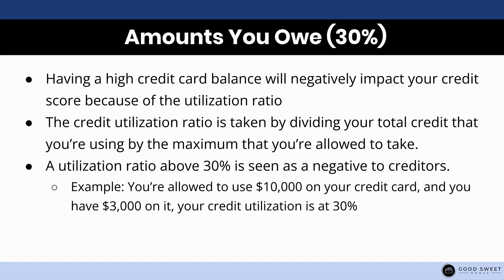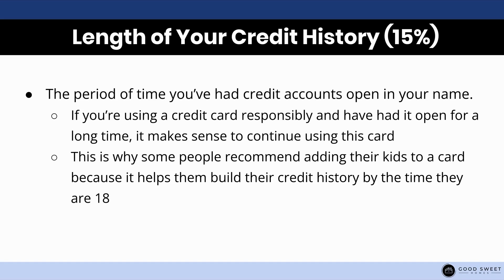For example, if your total limit on a credit card is $10,000 and you have $3,000 on it, then your utilization for the month is 30%, which is not too bad. Now, the length of your credit history accounts for 15% of your credit score — that's the period of time that you've had accounts open in your name. Naturally, someone with a long credit history and good payments is going to have a better credit score than someone who is 18 years old and has just opened their very first card.